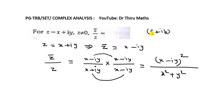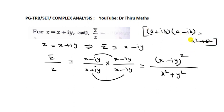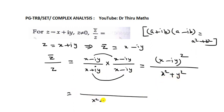Using the idea that for a complex number a plus ib, its conjugate is a minus ib, and their product gives real part squared plus imaginary part squared — applying this, the denominator X plus iY into X minus iY gives X squared plus Y squared. So the denominator is X squared plus Y squared.